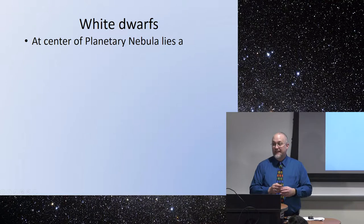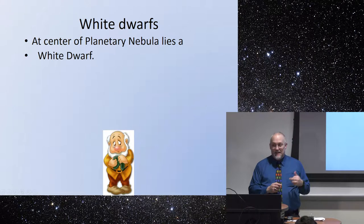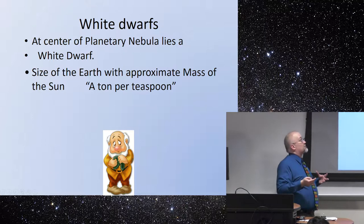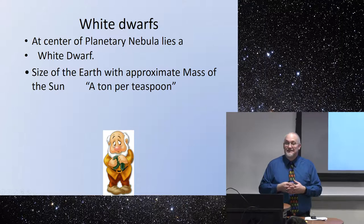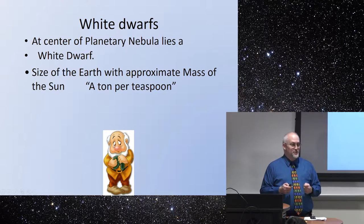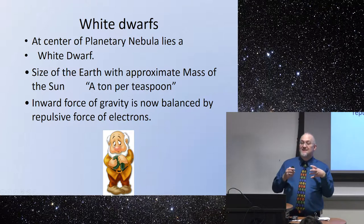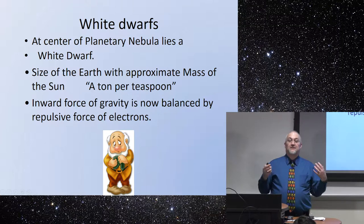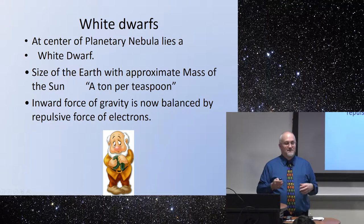What's left behind is the white dwarf — it's the center of the planetary nebula, that little bit at the core that didn't explode outward. It is something roughly the size of Earth with an approximate mass of the sun, since that outer layer that blows out is really not that much of the star. We give the analogy that it's about a ton per teaspoon — which means you've got to get a really strong teaspoon. The inward force of gravity is now balanced out by the repulsive force of the electrons in the atoms, which stops it from collapsing further, but it will radiate energy outward and eventually cool off and become a brown dwarf.